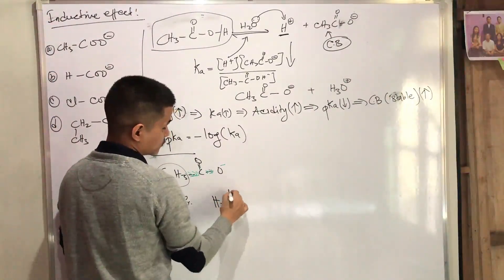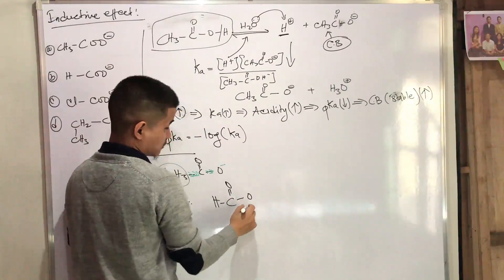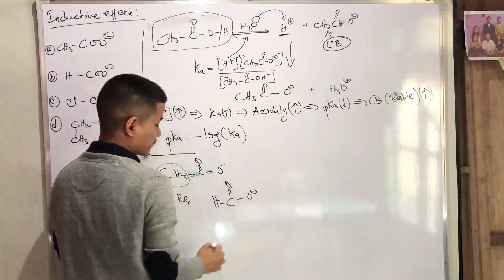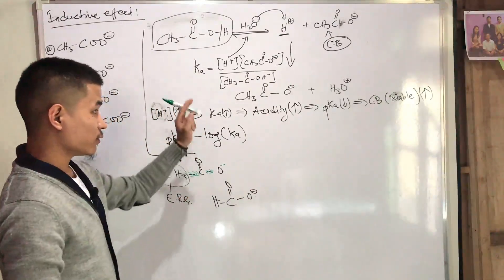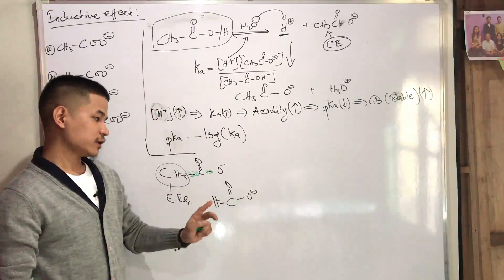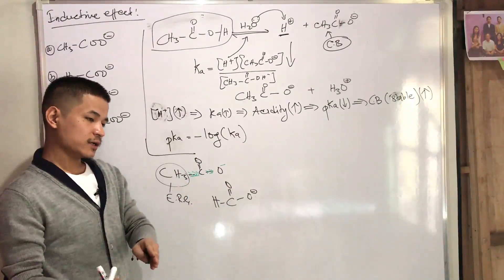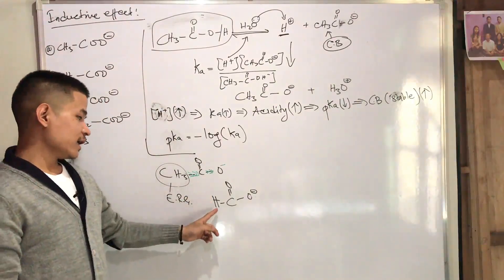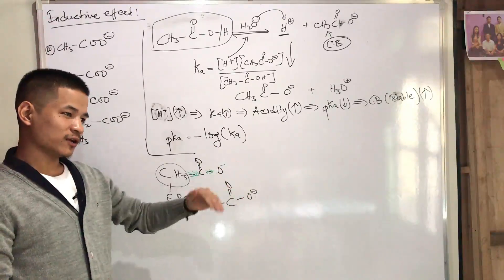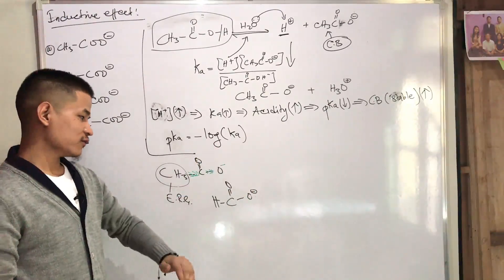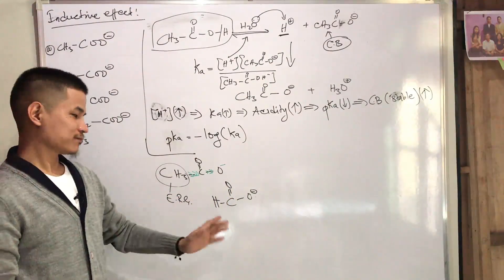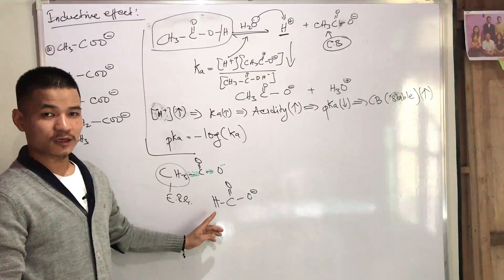This group is Acetic Acid. This group is Formic Acid. Formic Acid is the first group. We're going to show the electron-releasing group. This group is an electron-releasing group, but also an electron-withdrawing group — one takes a new fellow.